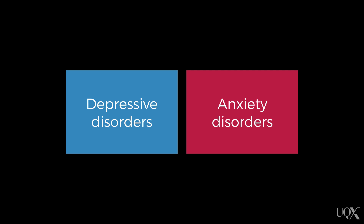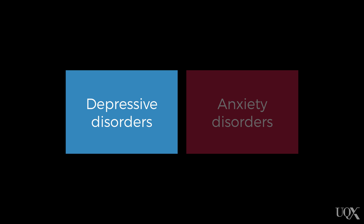We're going to be talking about two categories of disorders that often occur comorbidly or concurrently: the depressive disorders and the anxiety disorders. First, we'll talk about the depressive disorders.